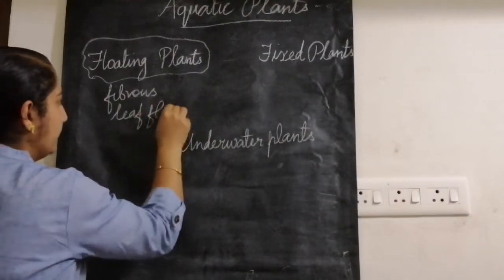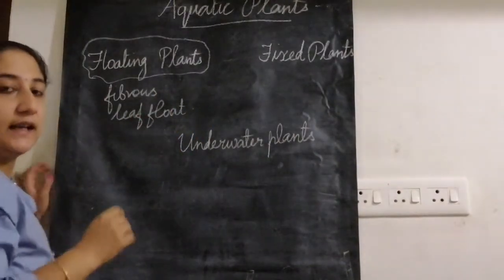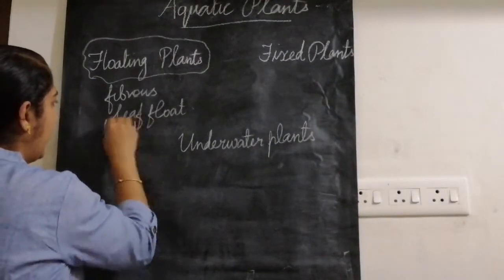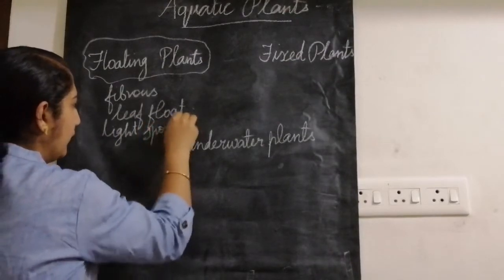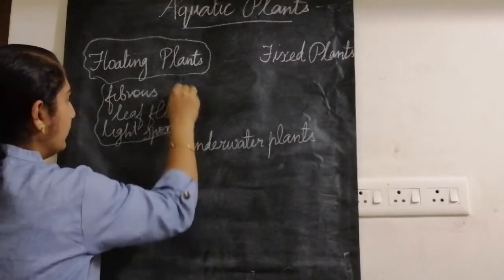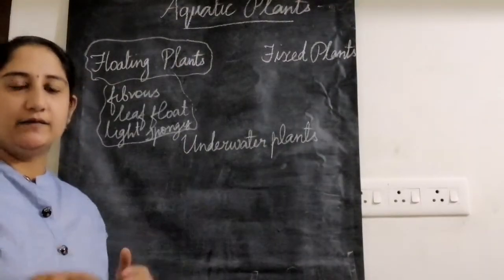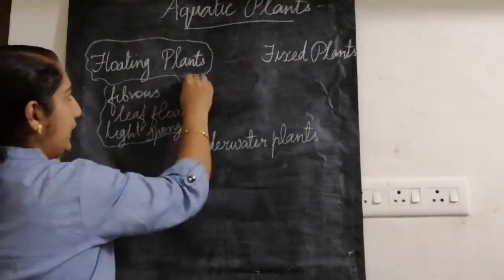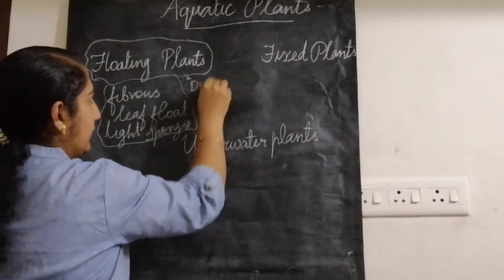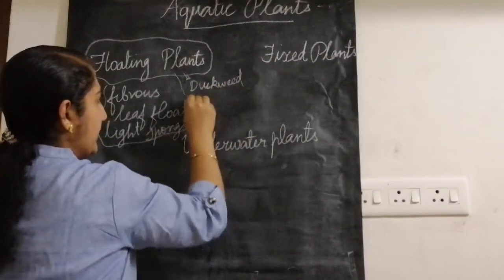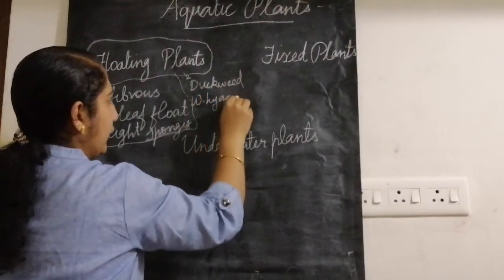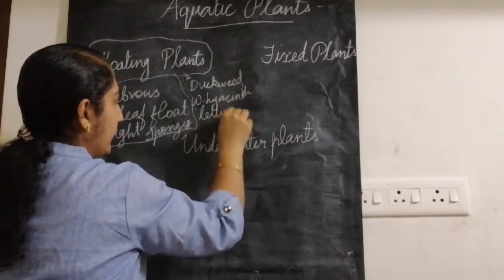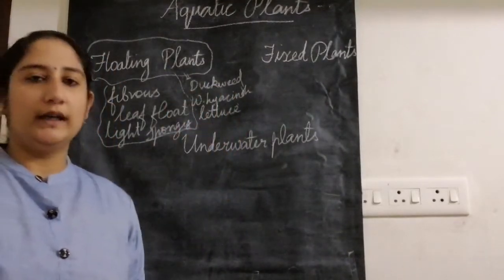These plants are light and spongy, which facilitates easy floating. The examples of floating plants are duck weed, water hyacinth, and water lettuce.